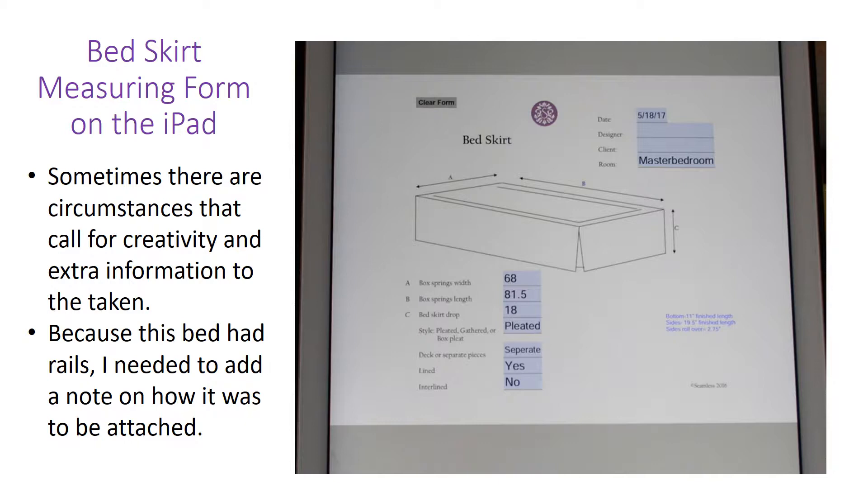This bed skirt was a little bit different than what I have had to do before. It was made in three separate pieces. This bed had a footboard. It also had rails on the side. And because of the way the bed was constructed, she wanted the rails covered. So we had to cover the rail, wrap it over the top of the rail, and then Velcro it to the back of the top of the rail. So I had some very different measurements. I went ahead and took measurements like I normally would. And if you can see on the bottom right-hand side, I have some notes there.